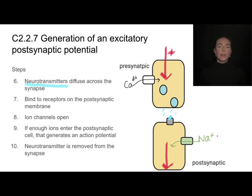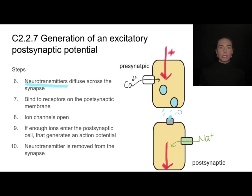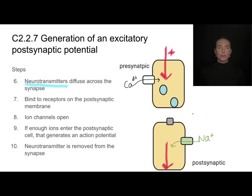Once all that has happened and we've started this action potential in the post-synaptic cell, the neurotransmitter should be removed from the synapse. We don't want a continued message — we don't want that. There are a couple of ways this can happen: either a re-uptake mechanism that pumps the neurotransmitter back into the pre-synaptic neuron, or an enzyme that comes along and destroys it. Either way, that removal is an important step.